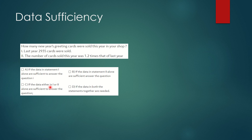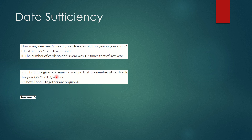Next question: how many New Year's greeting cards were sold in your shop this year? Statement 1 says last year 2935 cards were sold — this is about last year, so Statement 1 alone cannot answer the question. Statement 2 says the number of cards sold this year was 1.2 times that of last year — but without the base number we still can't solve it. Merging both: 2935 × 1.2 = 3522 cards were sold this year. Both statements are required, so the answer is option D.